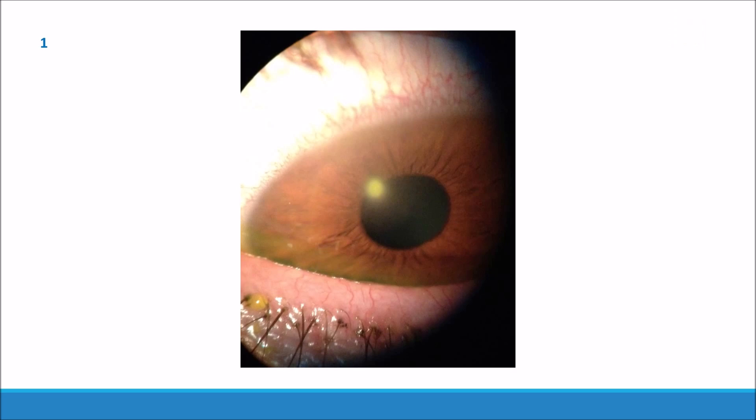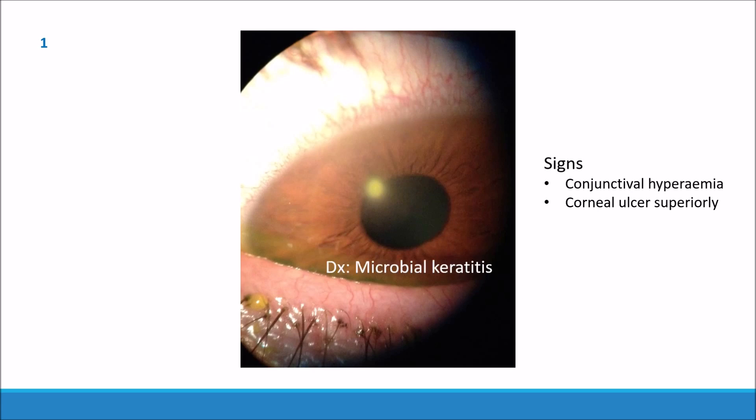In the first slide we have the patient looking down. We can see there is some conjunctival hyperemia and a superior corneal ulcer. Here the patient has microbial keratitis.